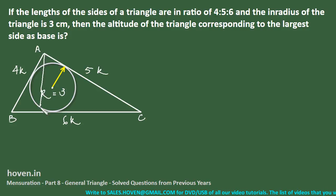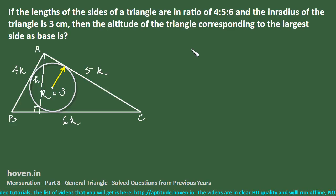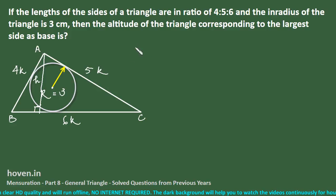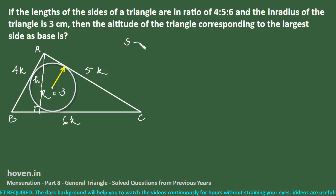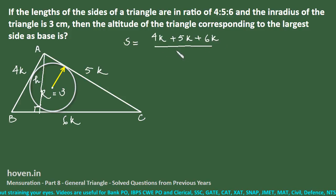We need to find the altitude h to the largest side (6k). The semi-perimeter S = (4k + 5k + 6k)/2 = 15k/2. Using the formula: Area = r × S = 3 × (15k/2) = 45k/2.